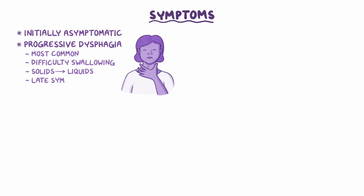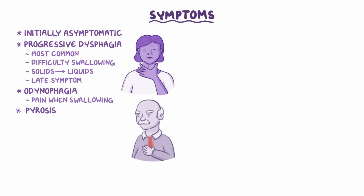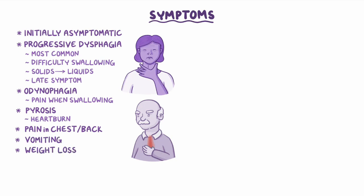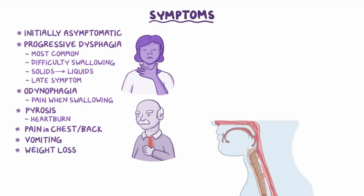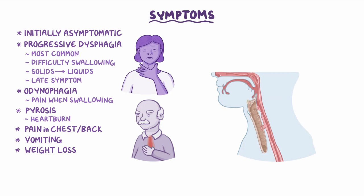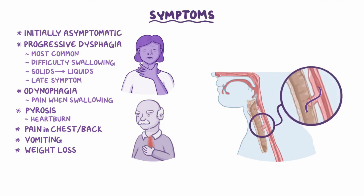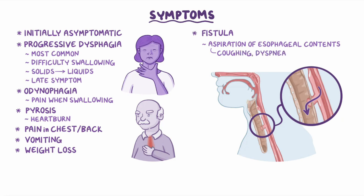Unfortunately, dysphagia is a late symptom. Other symptoms include odynophagia (pain when swallowing), pyrosis (heartburn), pain in the chest or back, vomiting, and weight loss. When the cancer invades and perforates the entire esophageal wall, it can invade the trachea in front of it, forming a fistula. This can cause pulmonary aspiration of esophageal contents, leading to symptoms like coughing and dyspnea. If the cancer spreads to the diaphragm, it can cause hiccups.